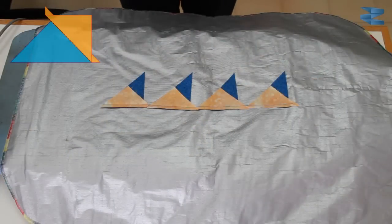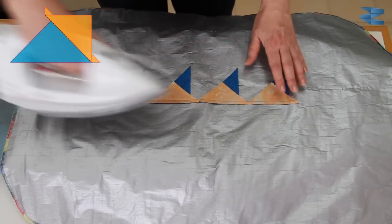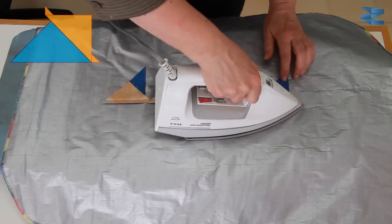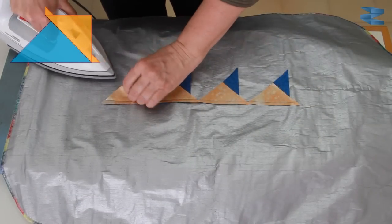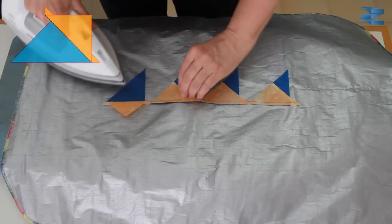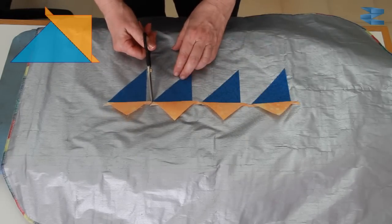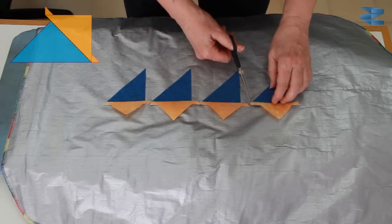Now we've chain pieced all the triangles together and I'm going to press them. In most cases you press the smaller triangle, which is orange in color, away from the center one. I'm going to just clip them apart.